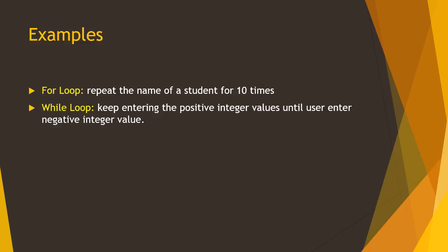Now let me discuss some examples of for loop and while loop. For example, repeat the name of a student for 10 times. In this situation we need to use the for loop because we know that we repeat the name of the student for 10 times. So here we already know that 10 is the maximum counter that we need to achieve.